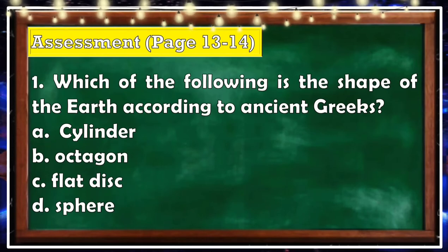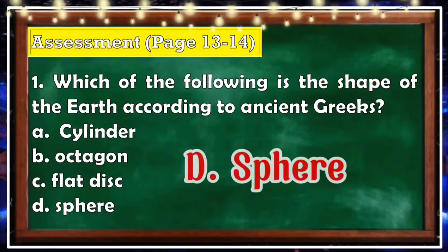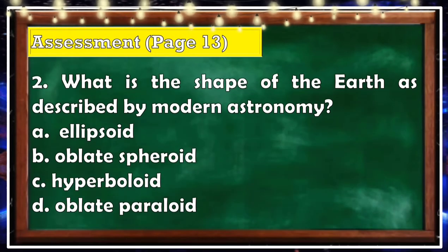Number 1: Which of the following is the shape of the Earth according to ancient Greeks? A. Cylinder, B. Octagon, C. Flat, D. Sphere. The correct answer is Letter D — Sphere. Number 2: What is the shape of the Earth as described by modern astronomy? A. Ellipsoid, B. Oblate spheroid, C. Hyperboloid, D. Oblate pharoid. The correct answer is Letter B — Oblate spheroid.